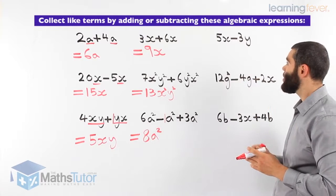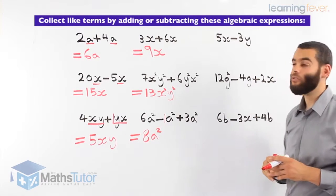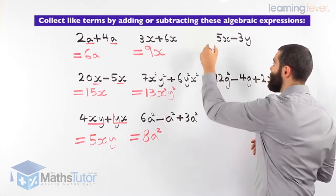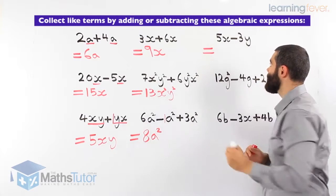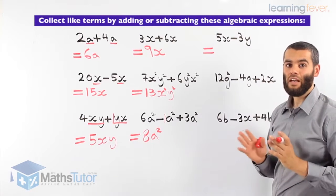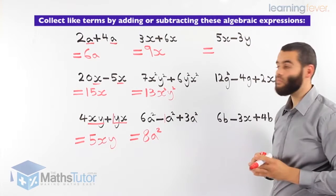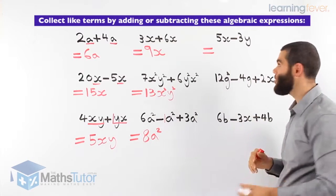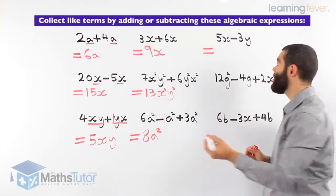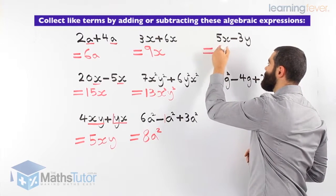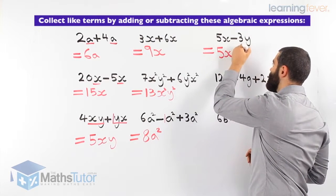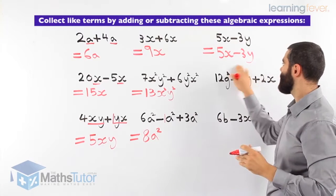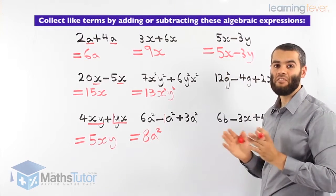This question: 5x take away 3y. They are asking us to collect like terms. But wait — we have an x here and a y here. They are different, they are not like terms, so we can't actually collect them. The answer is the same as the question — nothing changes. 5x take away 3y, that's as simplified as it gets.